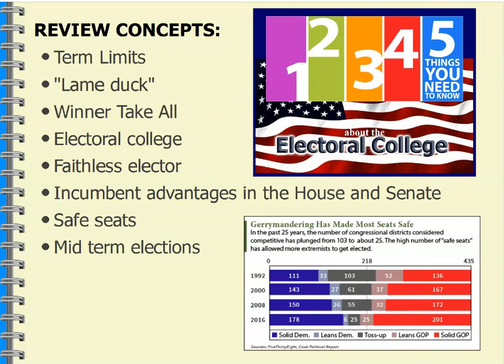There is incumbency advantage in the House and Senate — incumbents who run do have a better shot at winning. In the House particularly, we see a lot of safe seats. Gerrymandering has made that possible. Go back and look at the concepts in Chapter 11 related to gerrymandering and safe seats; many House members run for re-election and win pretty handily as a result.